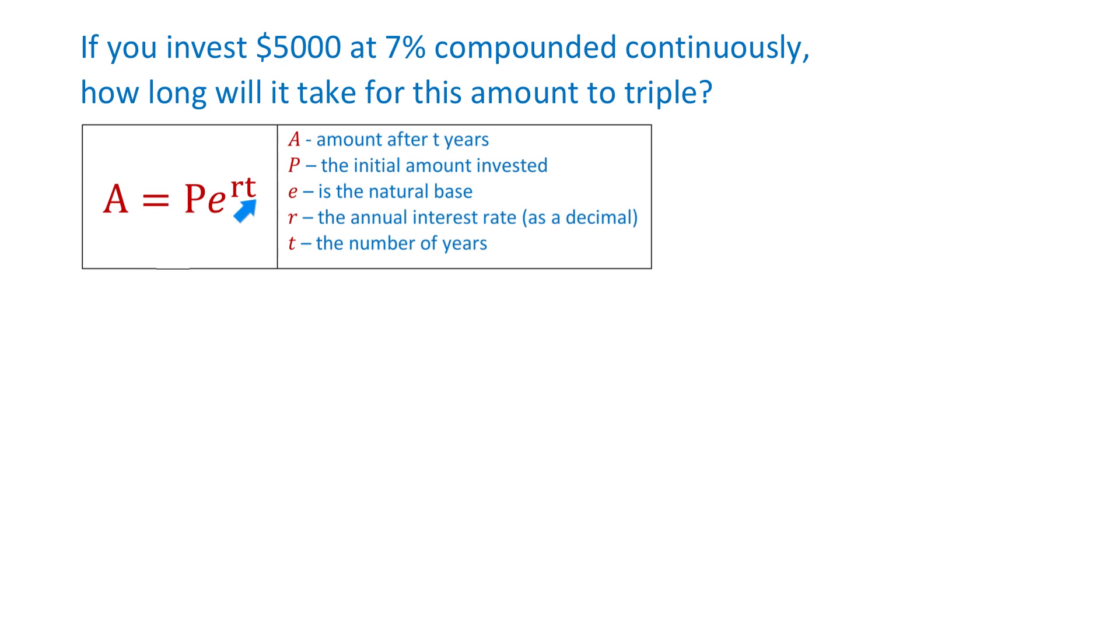A is the amount after t years. In our problem, the initial amount is $5,000.